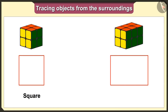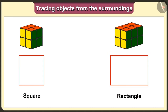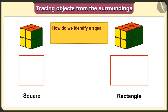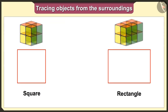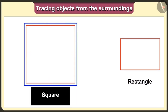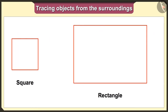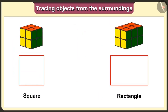Actually, when we trace this cuboid toy, we do not get a big square shape — we get a rectangle shape. How do we identify a square and a rectangle? Look carefully: in a square, the measurements of all sides are the same. In a rectangle, the measurements of the opposite sides are the same.